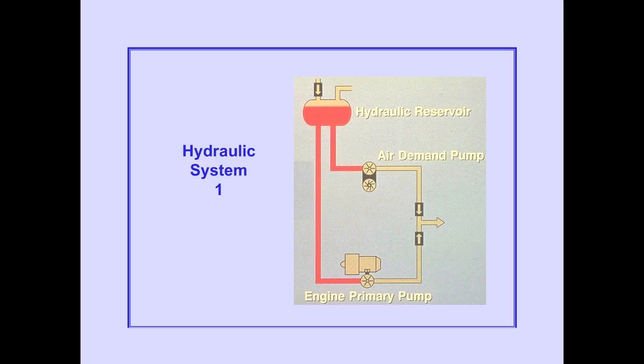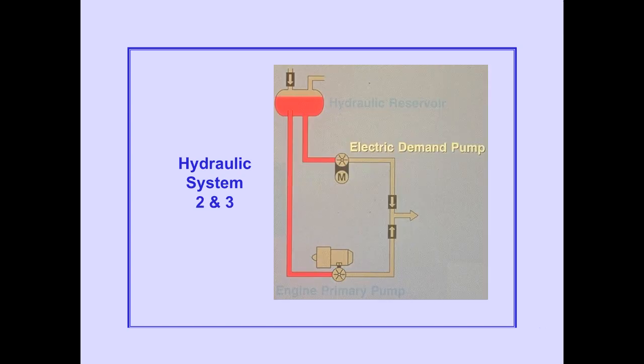Hydraulic system 1 consists of a hydraulic reservoir, a bleed air-driven demand pump, and an engine-driven primary pump. Systems 2 and 3 are identical to system 1, except the demand pumps are electric rather than bleed air-driven.